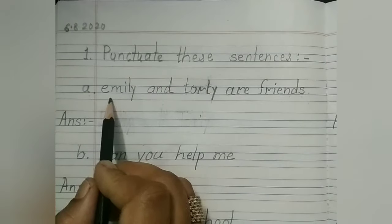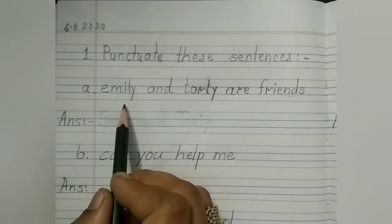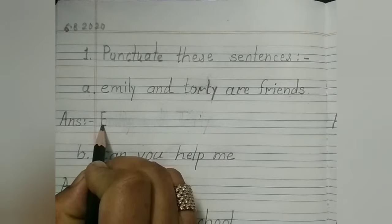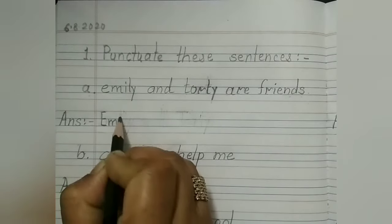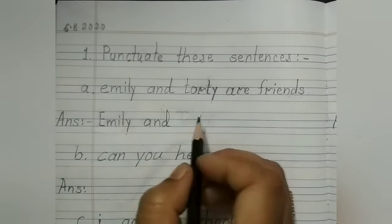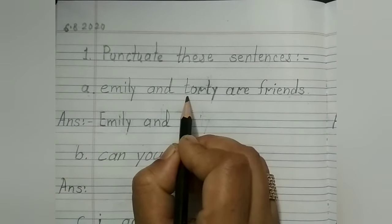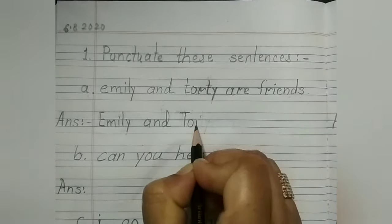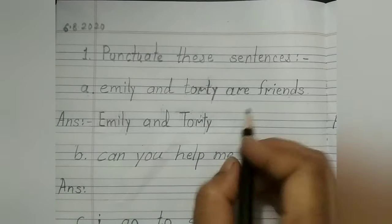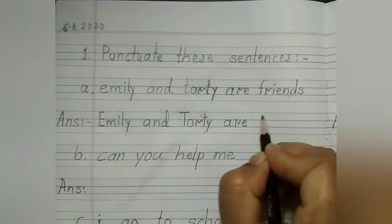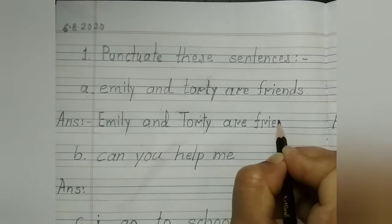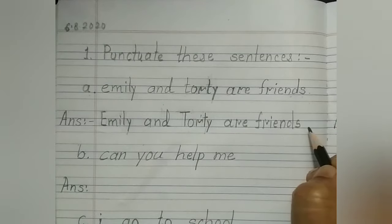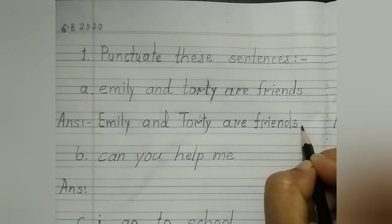The first sentence: Emily and Tottie are friends. Something is missing there. What is missing, dear children? The first letter of the sentence is not capital. So, I am going to write this E capital. Emily — and the second word is Tottie. This T is small. Tottie is a proper noun in this story, so here I will write T capital: Tottie are friends. The sentence will be complete, and when you complete the sentence, you have to put a full stop here.